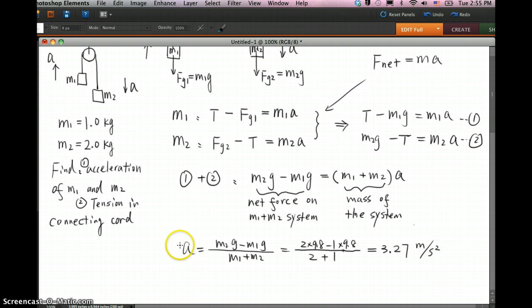And then plug in A to any of this equation, 1 or 2, whichever you like. So let's plug in A in equation 1. You can solve T equals M1 times A plus g equals 1.0 times 3.27 plus 9.8 equals 13.1 Newton. Okay, that's the answer. Done.